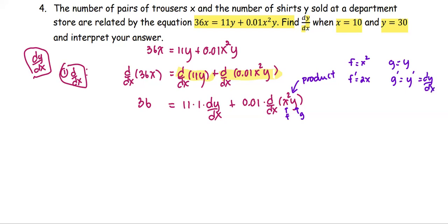And the product rule is fg' plus f'g. Let's write it out more clearly: 36 = 11 dy/dx + 0.01x² dy/dx + 0.02xy.